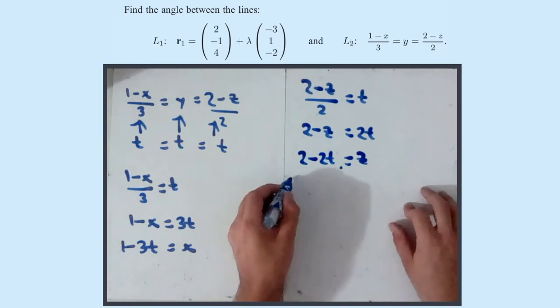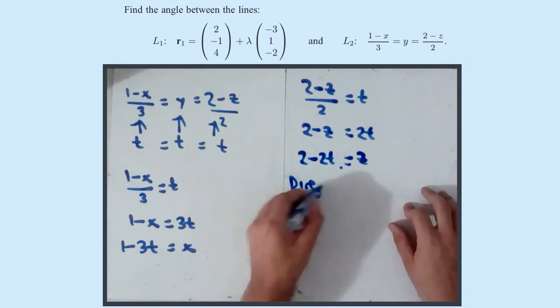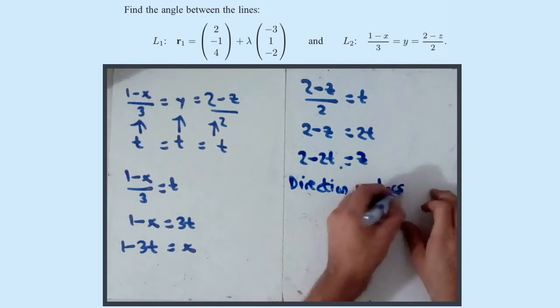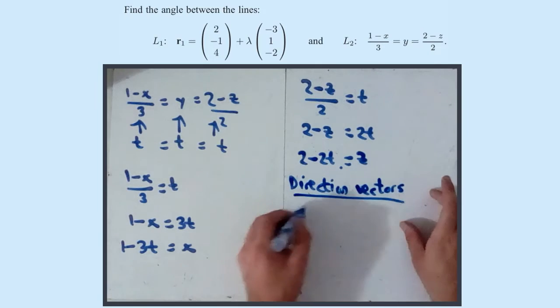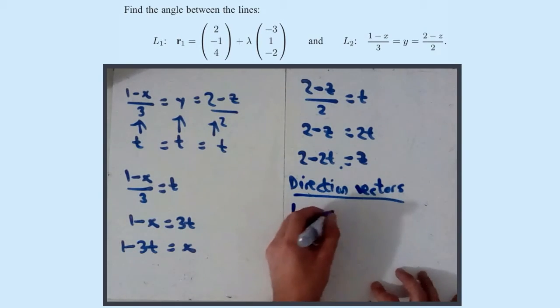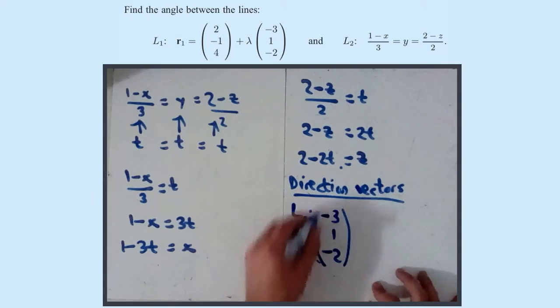So now we have the direction vectors. The direction vector for L1 is already given to us in the question. It's (-3, 1, -2).